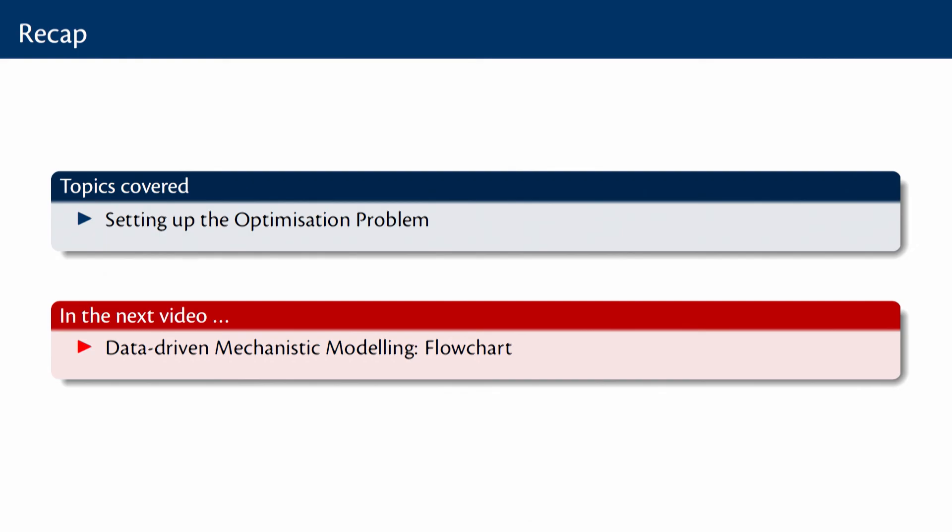In this video, we had a good overview of how we set up the optimisation problem for parameter estimation. In the next video, we will look at a classic flowchart for data-driven mechanistic modelling — where you have some data on a biological system and you want to build a mechanistic model. How do you go about doing it and what are all the various steps involved?